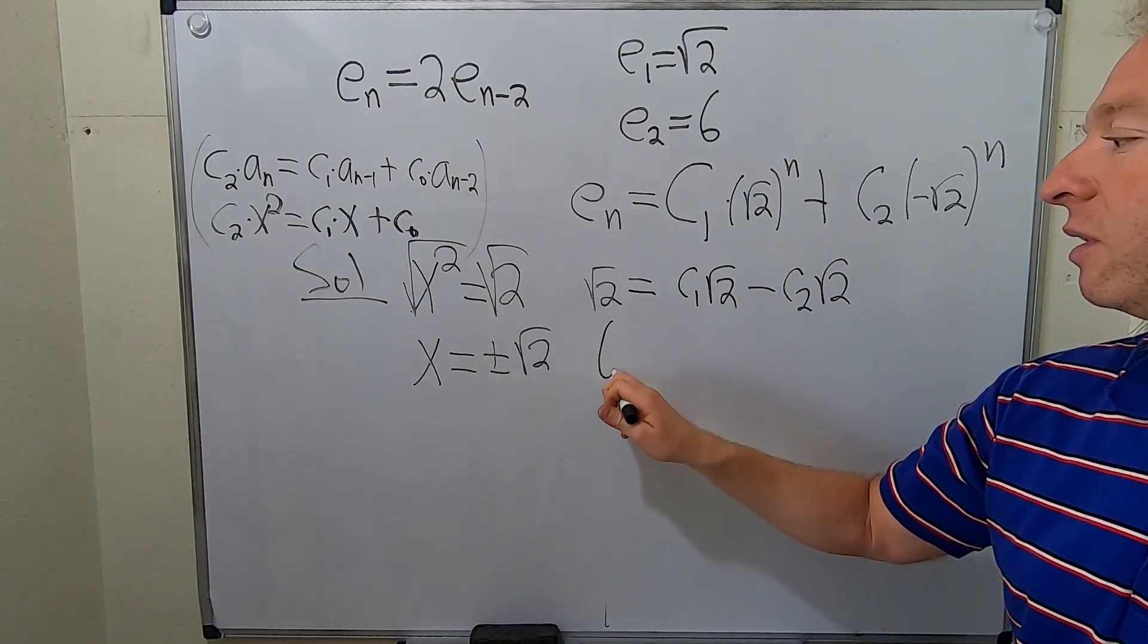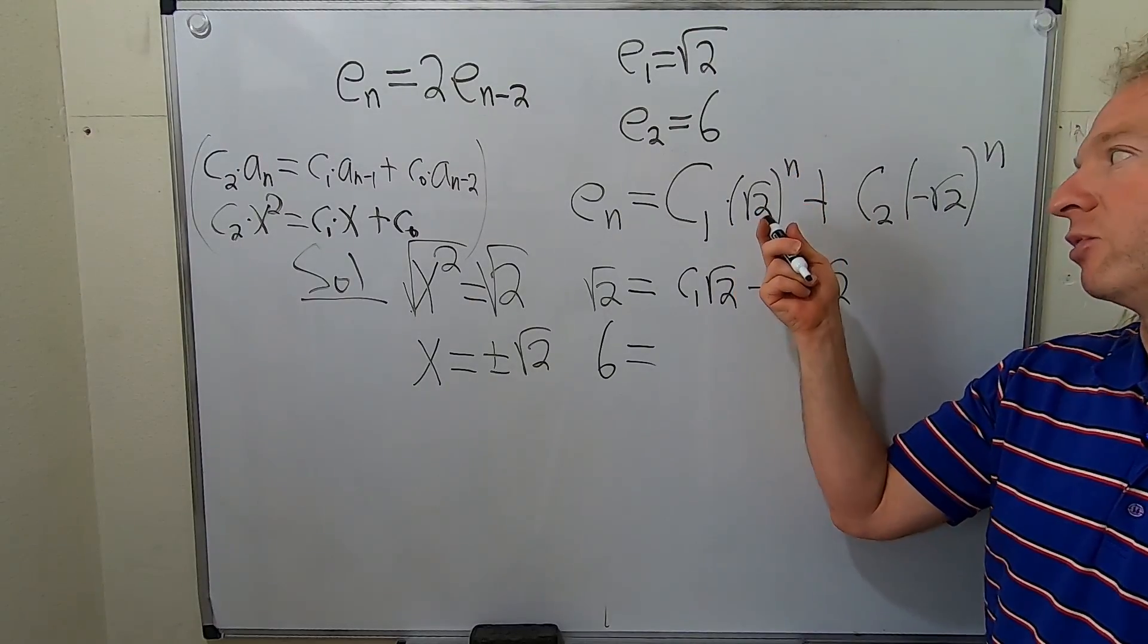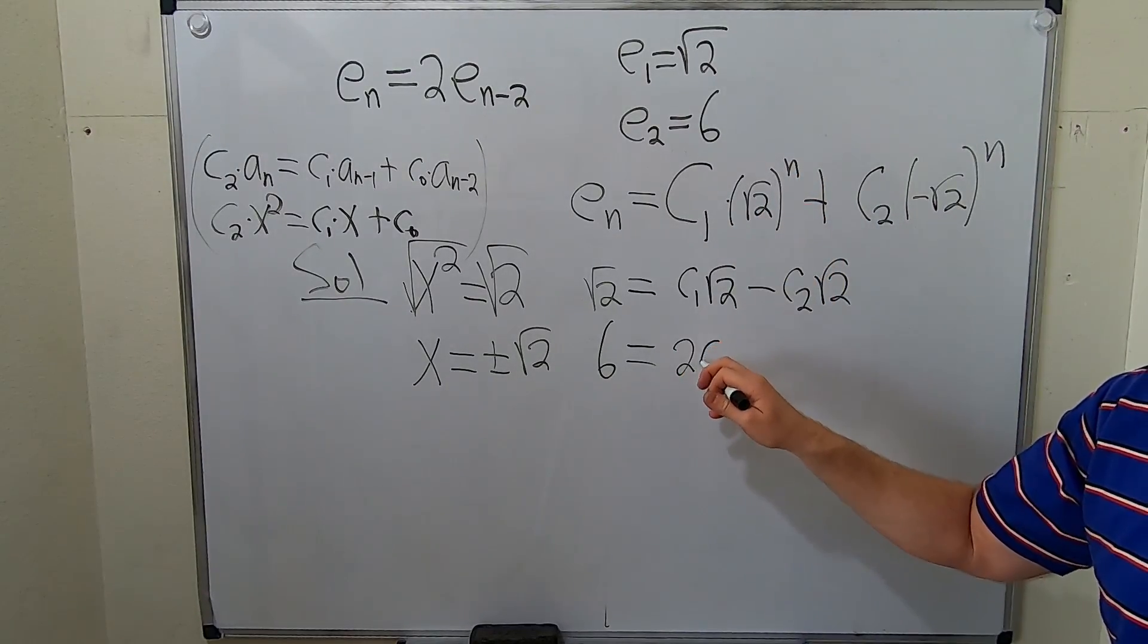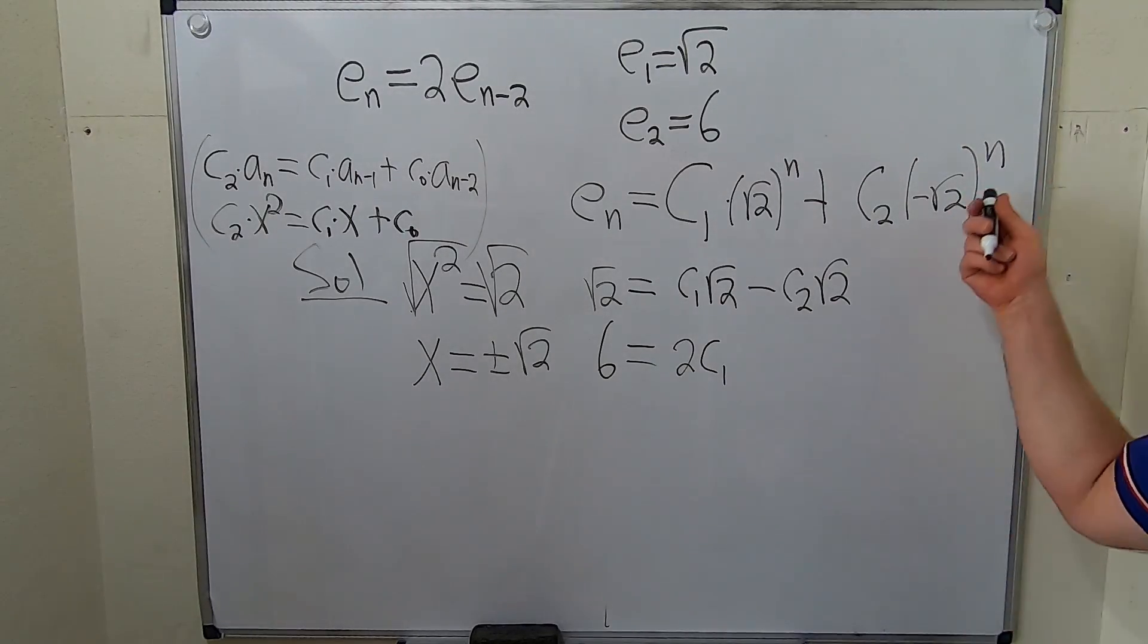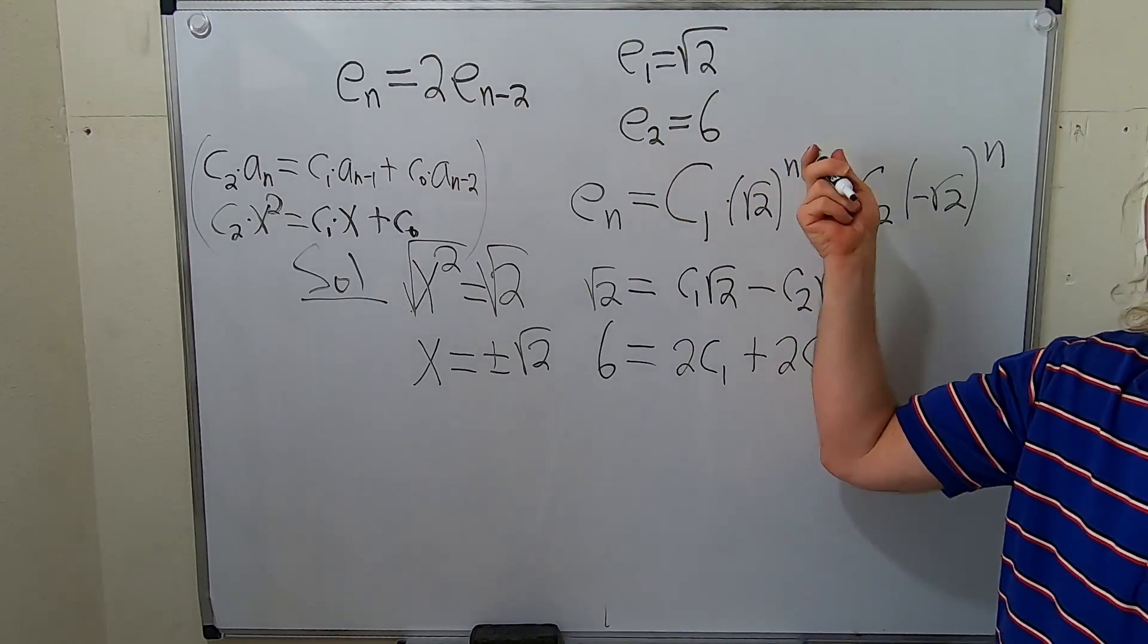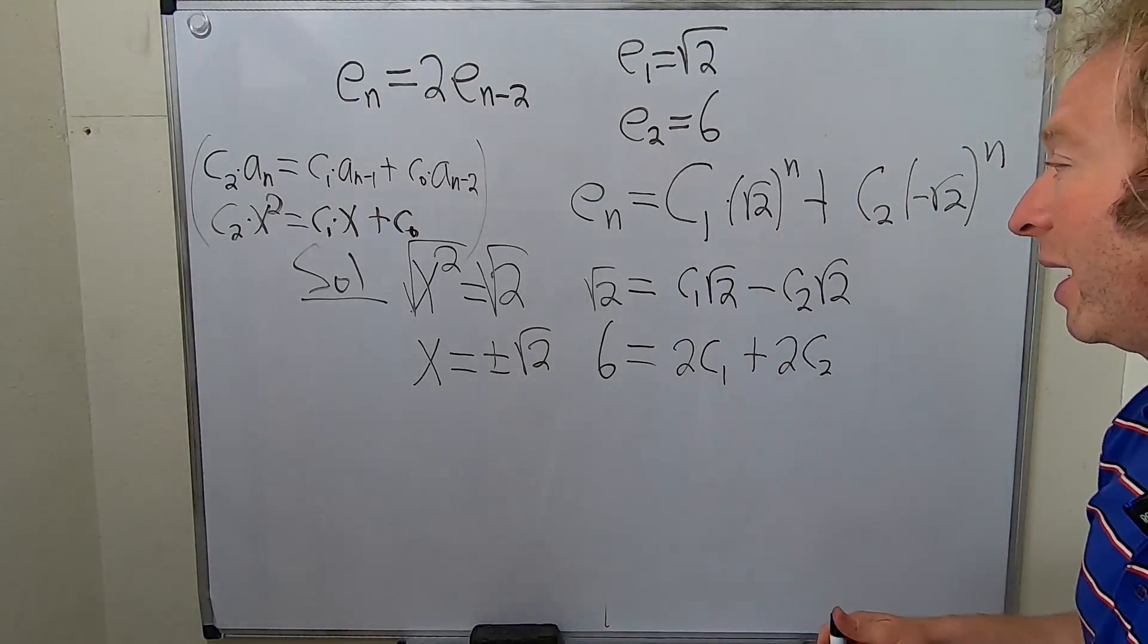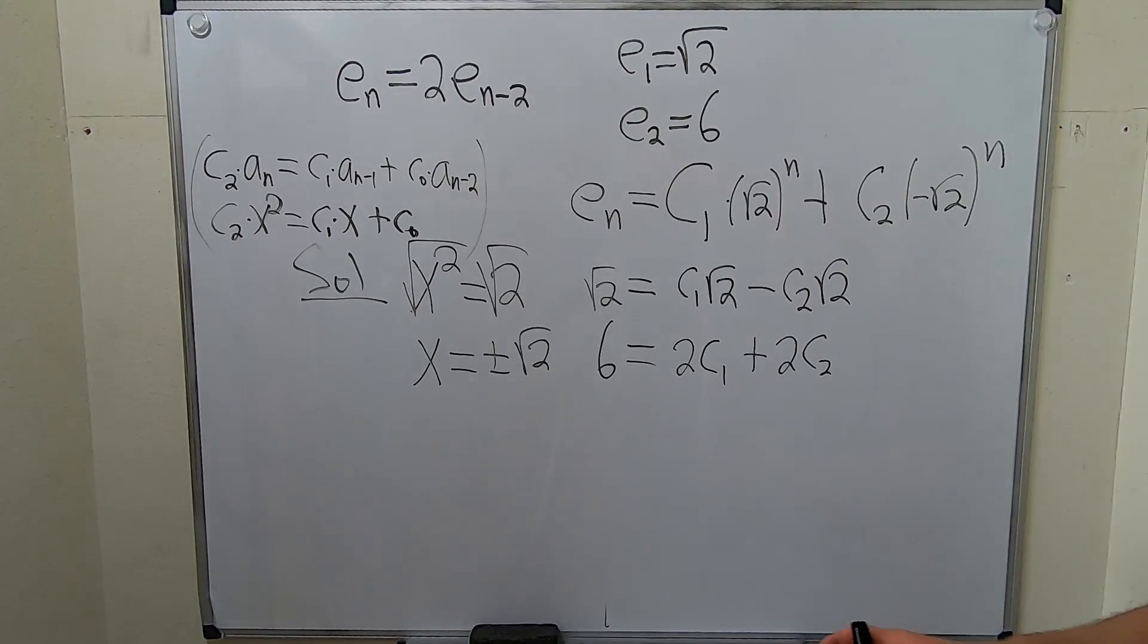6 equals. So we square this one this time. So when you square that, you're just going to get 2C1. Right, 2C1. And then when you square this one, the negative is going to go away. And the square root is going to go away. You'll get 2C2, right? We're squaring it because n is 2, right? Okay, we have to solve this equation. So how do you do that? I think I know a way. I haven't done this before, but I think I know a simple way.